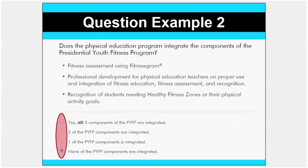Another question format is designed by criteria. For example, in this health-related fitness question about the integration of the Presidential Youth Fitness Program and Fitnessgram, the question lists three necessary components: giving the physical Fitnessgram assessment to students, professional development about Fitnessgram, and student recognition for meeting the healthy fitness zones or their personal goals. You simply select how many of the components you currently integrate into your physical education program, and that's your answer choice.